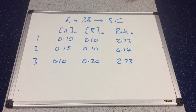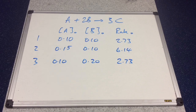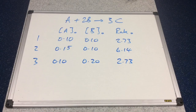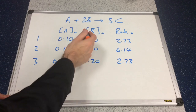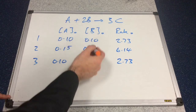So we'll look at this next example now — feel free to pause the video and have a go yourself. I'm going to work out the orders with respect to A and B, generate the rate equation, calculate the value for k, and calculate the units of k. We'll start with the order with respect to A — we need to keep B constant, so that's experiments 1 and 2.